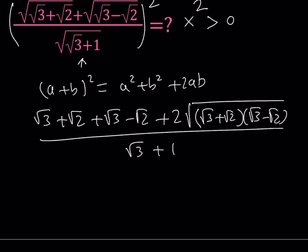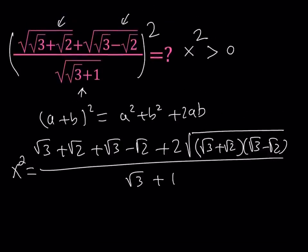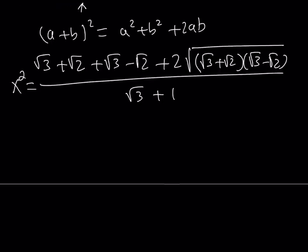Now let's simplify this expression even more. But remember, this is equal to x squared, and x is always greater than 0. I wrote, it kind of looks like x squared is greater than 0, but what I meant to write was x is greater than 0. Of course, x squared is also greater than 0 in that case. Now, square root of 2 cancels out, and we can write this as 2 root 3.